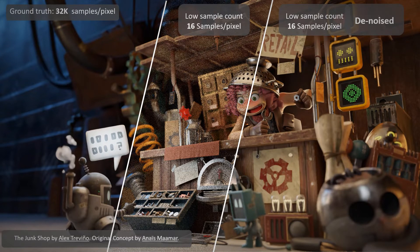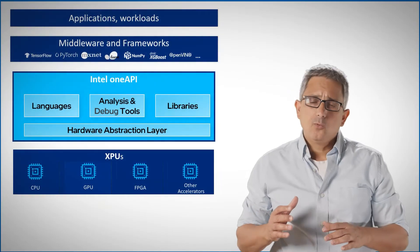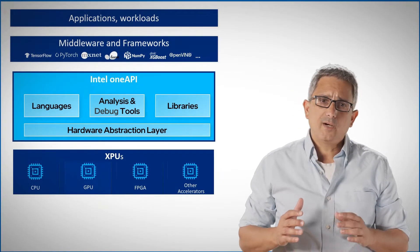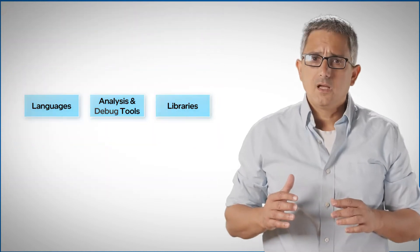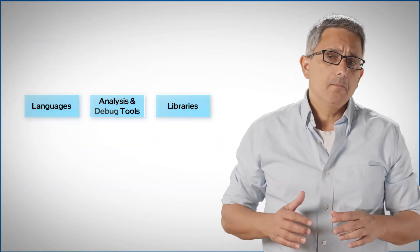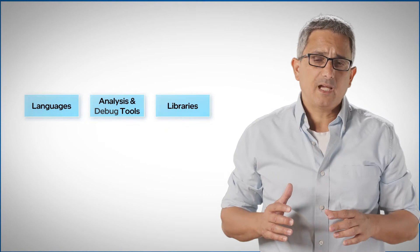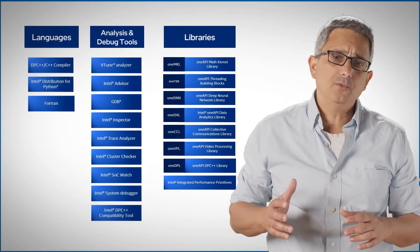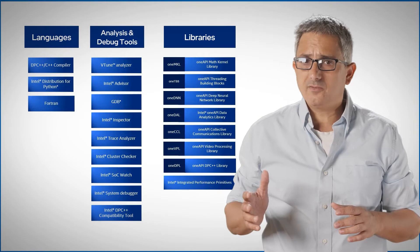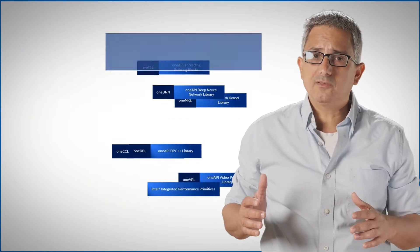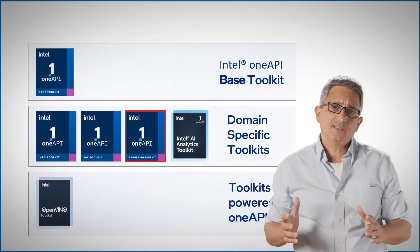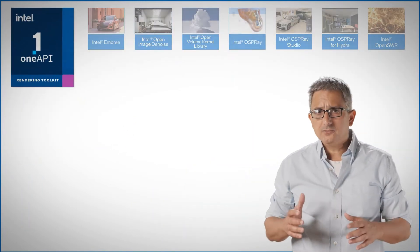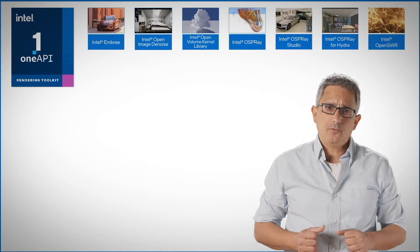This is what Intel Open Image Denoise is all about. In previous videos we talked about the OneAPI components — the multi-device, multi-vendor, and open spec libraries that can now work on multiple devices: CPU, GPU, and others, what we call XPUs — arranged into two toolkits. One of them is the OneAPI Rendering Toolkit, which includes the Open Image Denoise library.